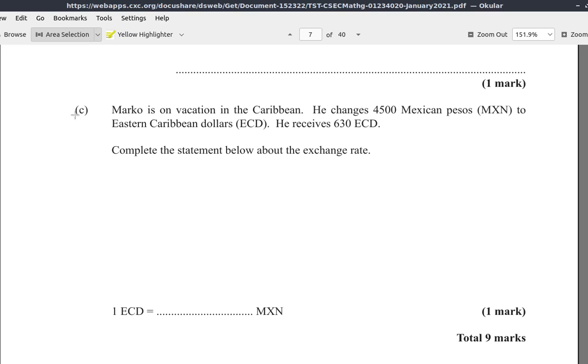It says, Marco is on vacation in the Caribbean. He changes 4,500 Mexican pesos, that's MXN, to Eastern Caribbean dollars ECD. He receives 630 ECD. Complete the statement below about the exchange rate.